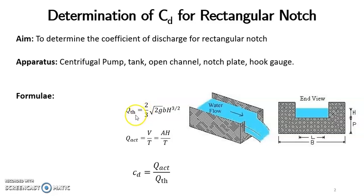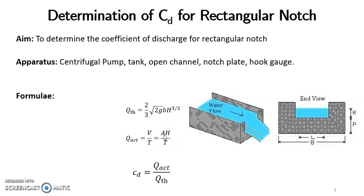The key formulas for this experiment are: Q theoretical, that is theoretical discharge, which is equal to (2/3) × √(2g) × B × H^(3/2), where H is the head over the notch, g is the gravitational constant, and B is the width of the notch. Q actual is equal to volume divided by time, which equals A × H divided by T, where A is the cross-sectional area of the collecting tank, H is the rise of water in the collecting tank, and T is the time required. Coefficient of discharge CD equals Q actual divided by Q theoretical, same as in the V-notch experiment.